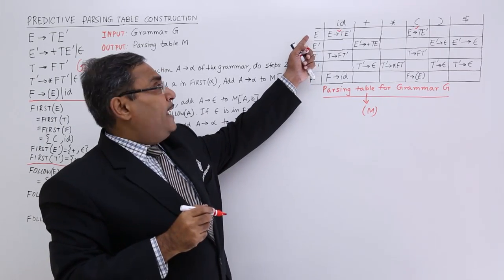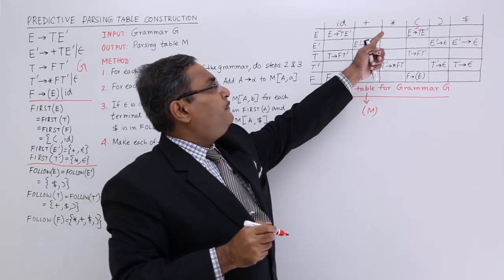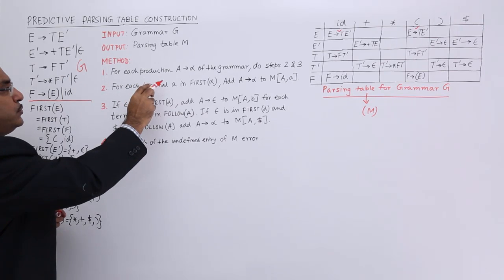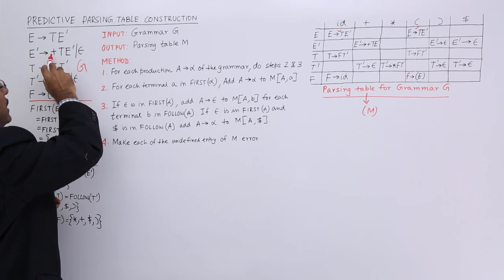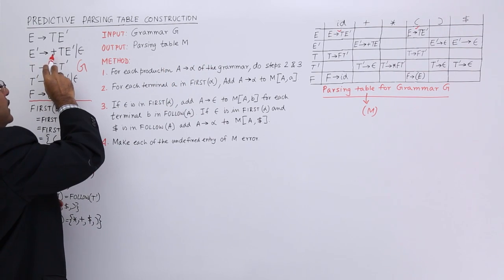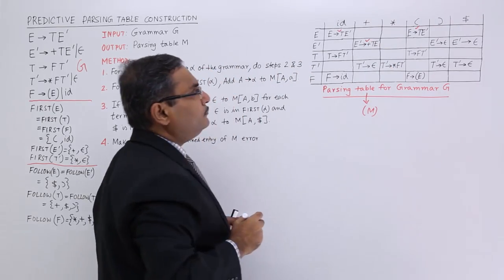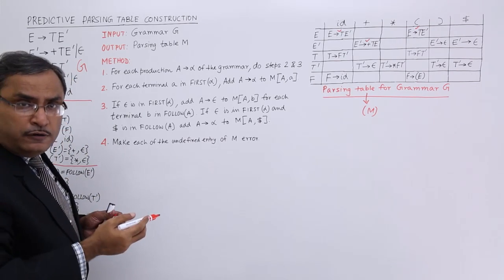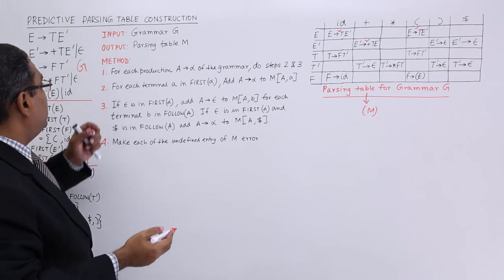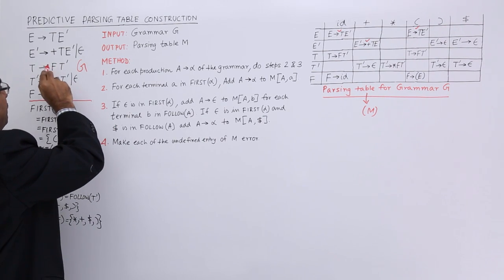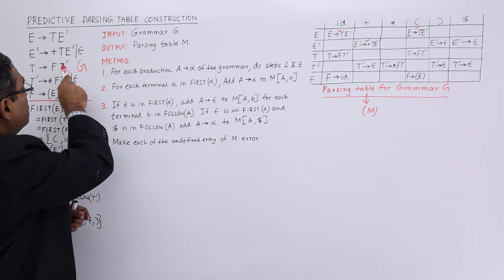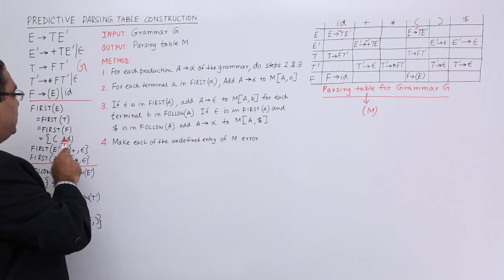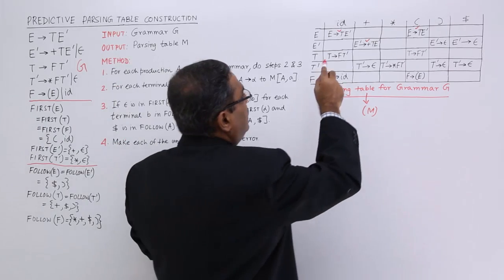Now let me apply rule number 2 for the rest. First of a terminal is the terminal itself. So E' produces plus TE' should be written in row E', column plus. Since first of plus cannot contain epsilon, I shall not consider the rest. For T produces FT', first of alpha means first of F, which contains opening bracket and ID. First of F does not contain epsilon, so across those columns I will have T produces FT'.